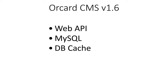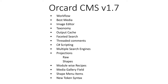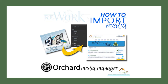On version 1.6, they added Web API, MySQL, and DB cache. On version 1.7, they added workflow, better media image editor, taxonomy, output cache, facet search, threaded comments, C# scripting, multiple search engines, projections with raw and shapes, module-wise recipes, media gallery field, shape menu items, and new token syntax.